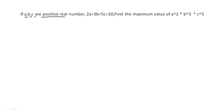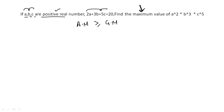Whenever you see these kind of questions where a, b, c are positive and they have given you some sum and they're asking you to find the maxima or minima of the product, this condition should trigger in your mind that this is nothing but a concept of arithmetic mean and geometric mean — the AM-GM concept.